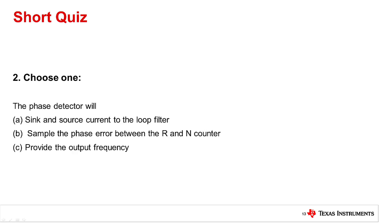Choose one. The phase detector will sink and source current to the loop filter. Choice B, sample the phase error between the N and R counter. Choice C, provide the output frequency.